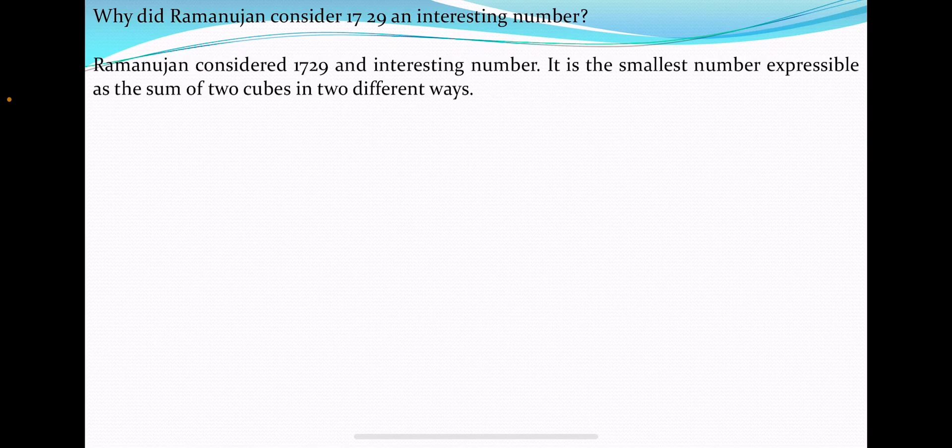Why did Ramanujan consider 1729 an interesting number? Ramanujan considered 1729 an interesting number because it is the smallest number expressible as the sum of two cubes in two different ways.